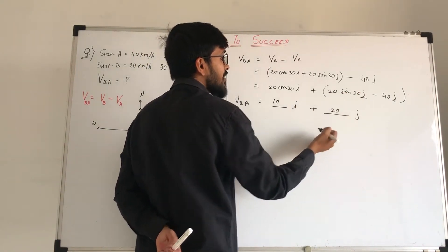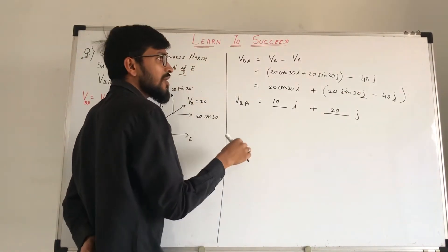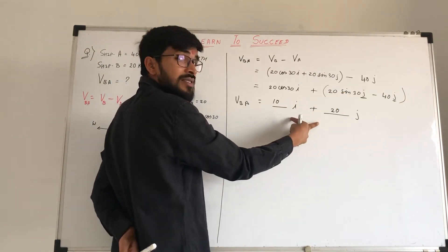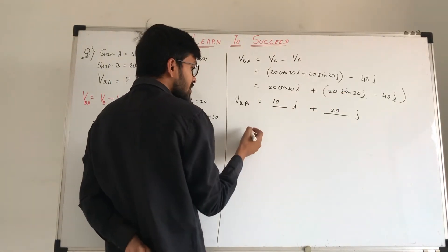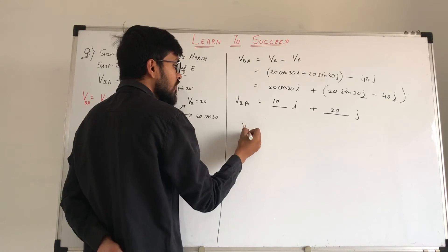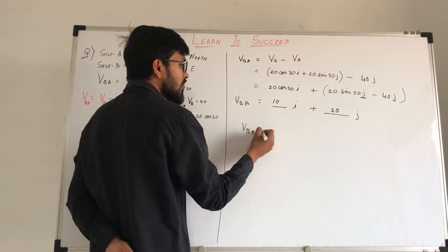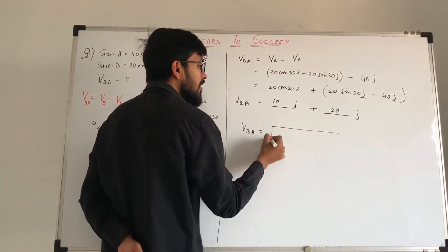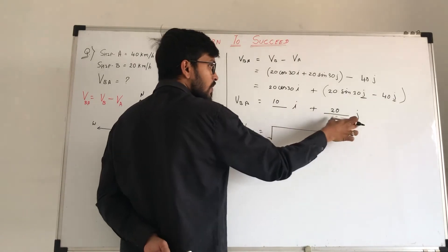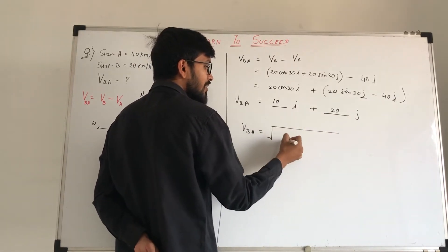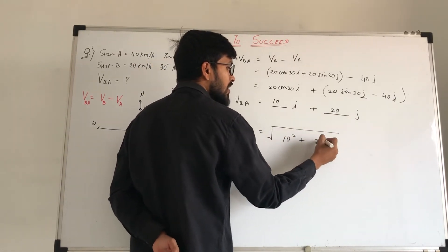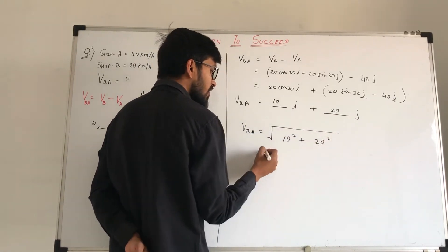Then we can find the actual answer. We have to find the magnitude of the velocity of B with respect to A, which is under the root of x squared plus y squared. So x squared is 10 squared plus y squared is 20 squared, and we get the final answer.